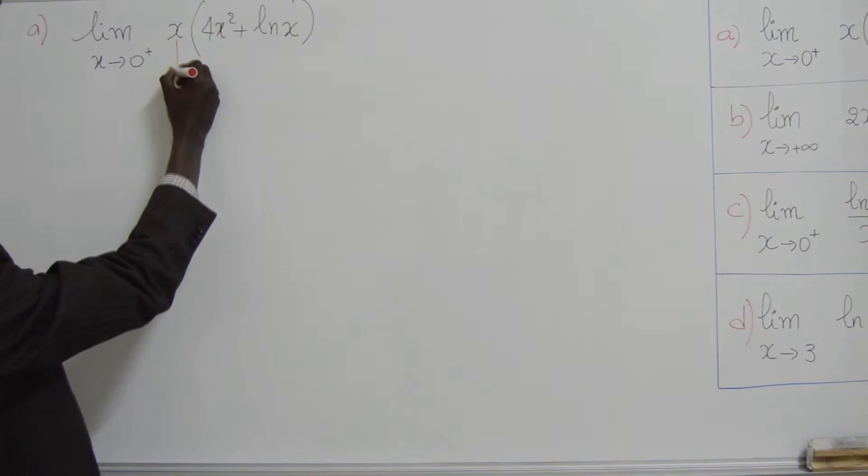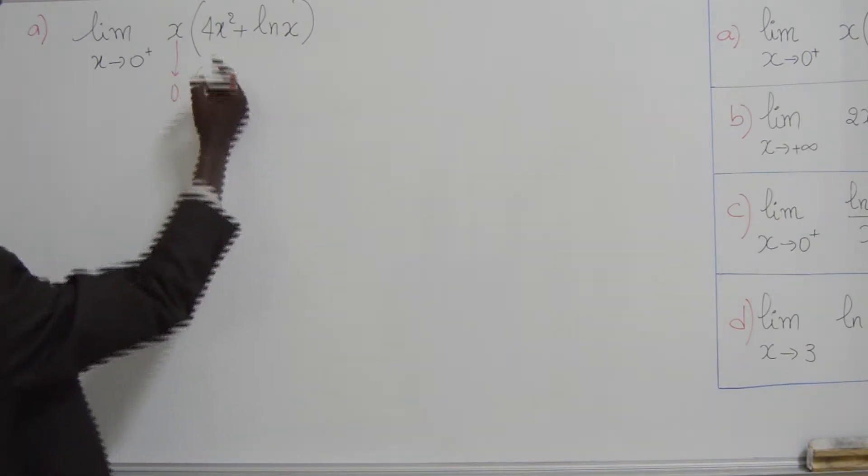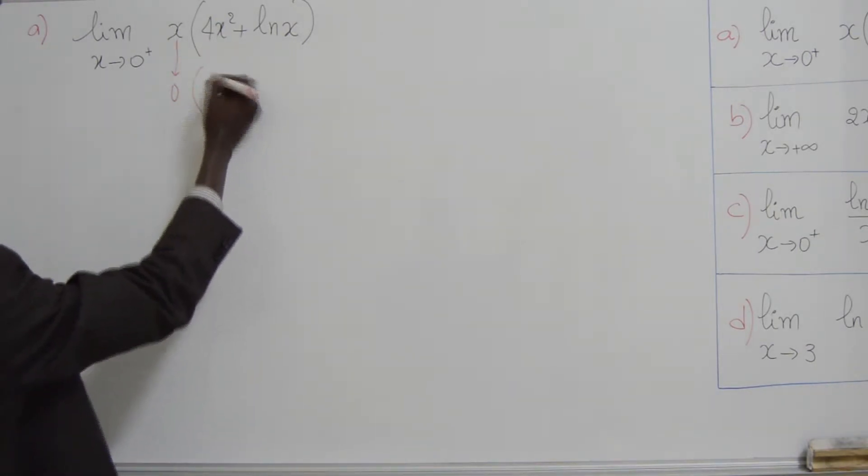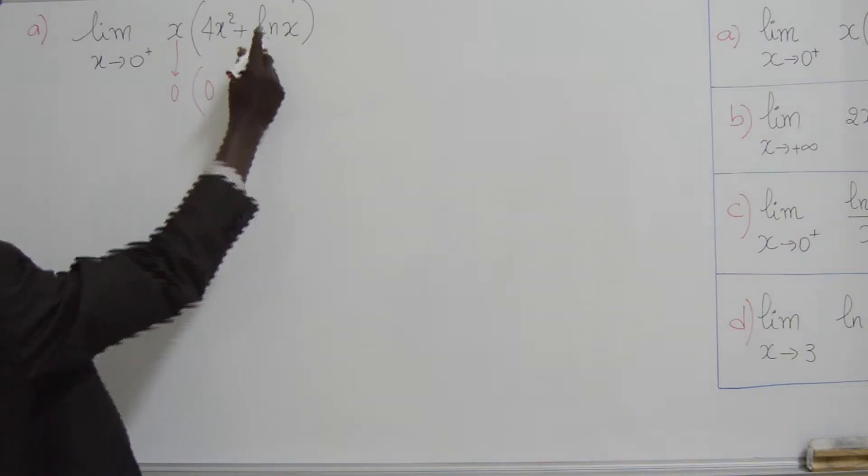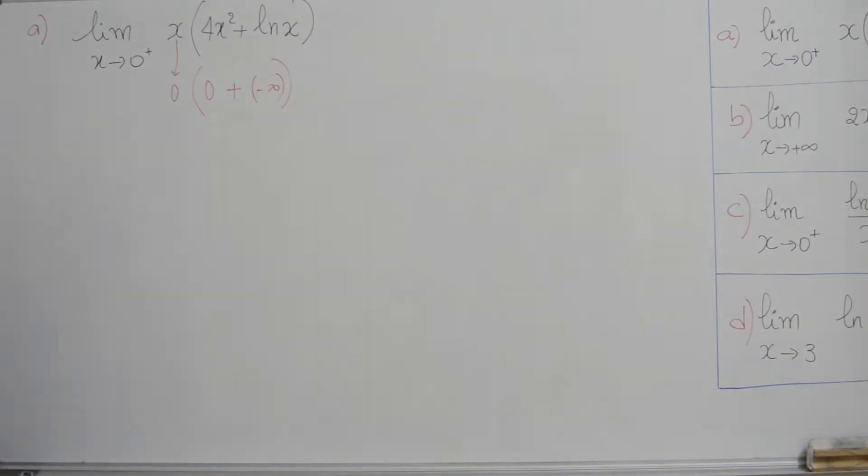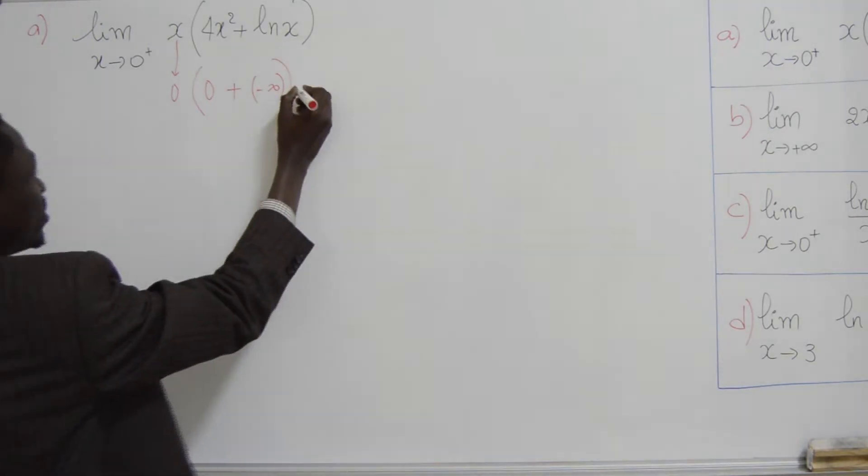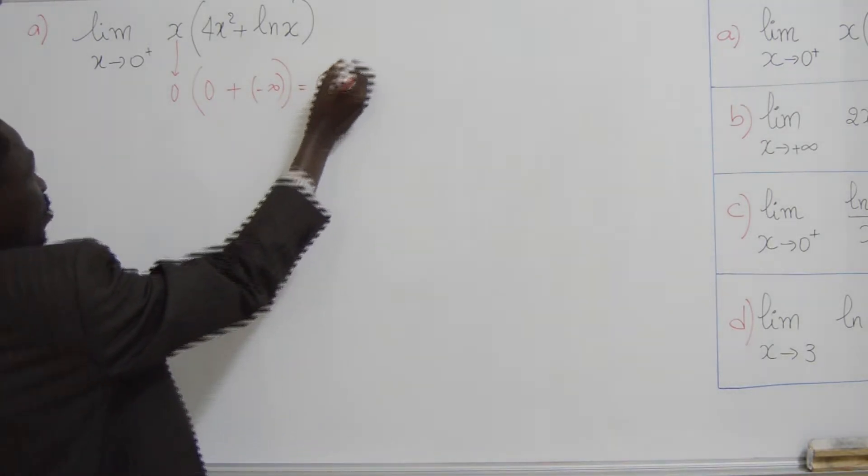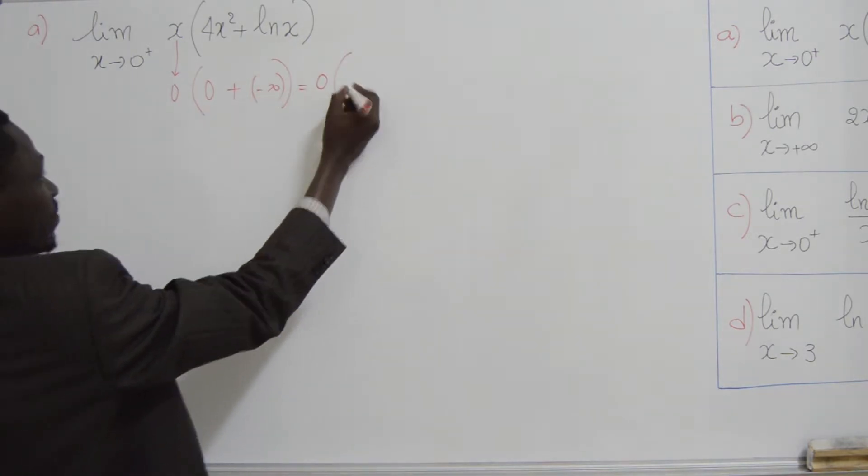On va devoir faire un calcul direct. On sait que x tend vers 0, 4x² c'est 0, plus ln2x tend vers moins ln2. Alors, le calcul, ça donne quoi? 0, facteur de 0, plus moins ln2, ça donne moins ln2.